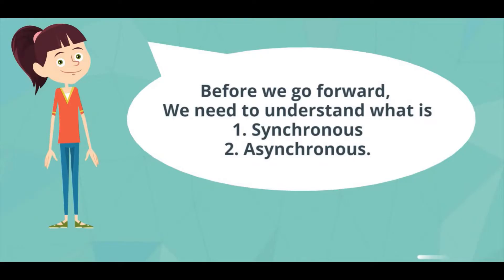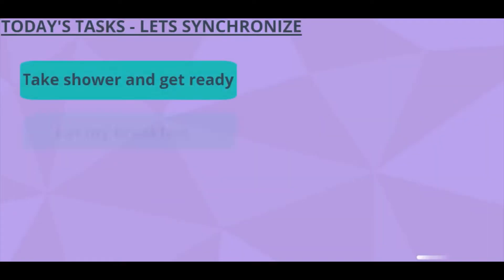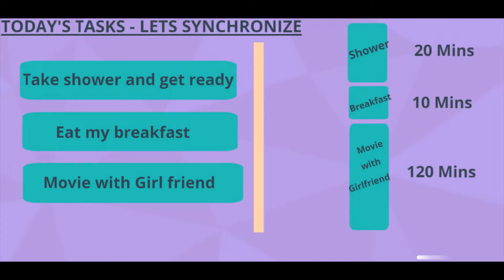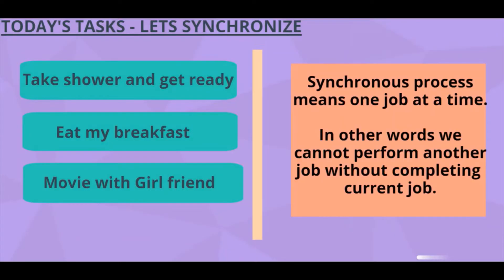Let's start. Let's talk about a synchronous job. Let's say when I woke up today I have 3 tasks to do: taking a shower, eating my breakfast, and then a movie with my girlfriend. Taking a shower takes 20 minutes, breakfast takes 10 minutes, and the movie takes 120 minutes. One job cannot be started until the current job is completed — while taking a shower I cannot start breakfast. This is a synchronous process: one job at a time. In other words, we cannot perform any other task without completing the current job.